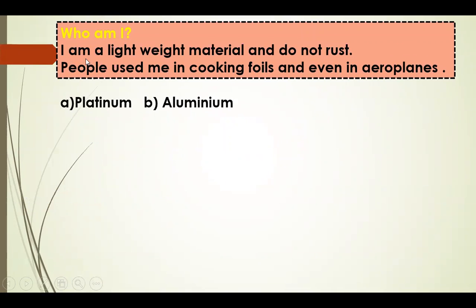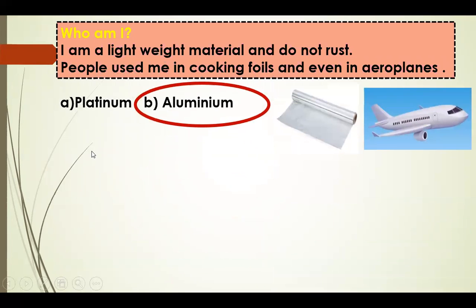Who am I? I am a lightweight material and do not rust. People use me in cooking foil and even in aeroplanes. Choose the right answer. Options: Platinum and Aluminium. The answer is Aluminium — Aluminium is a lightweight material.